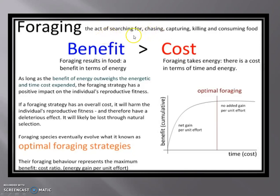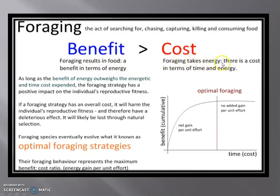Foraging is basically the act of searching, chasing, capturing, killing, and consuming food. These are the sequential steps: first searching, then chase, then capture, then kill, and then consume. The benefit of foraging — food in terms of energy — must always be more than the cost in terms of time and energy expended.